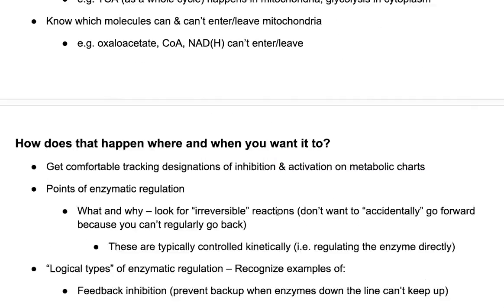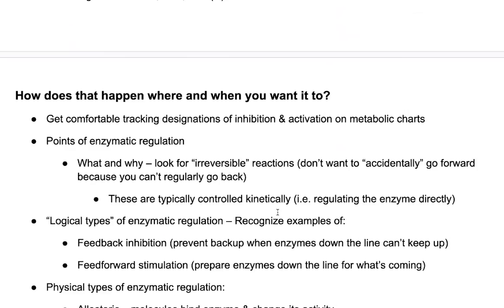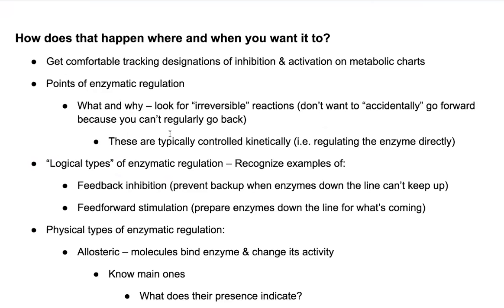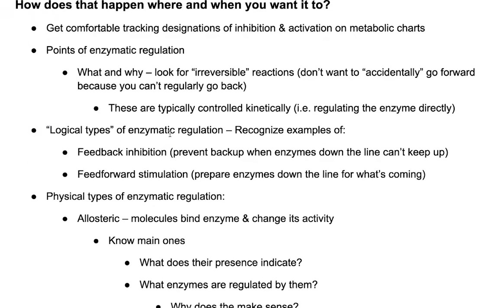Your liver has some different regulatory properties so that some molecules in metabolism are actually going to be affected by PKA in the liver but not in your muscles. That way you can do things like shut off glycolysis in response to epinephrine in your liver by inhibiting pyruvate kinase, whereas you wouldn't want that to happen in your muscles. These are the physical ways regulation can happen, but then also think about what kind of logical type of regulation it is. Look for examples of feedback inhibition, where you prevent backup when enzymes down the line can't keep up.